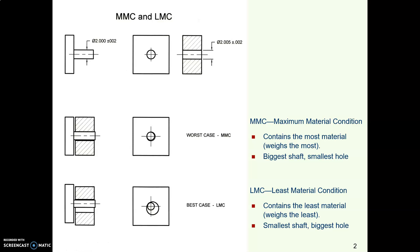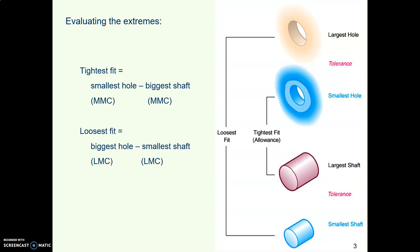And we can use these two extremes, the biggest and the smallest, to evaluate our tolerances that we put on drawings. And this is a good rule of thumb whenever you're designing something. If you always evaluate the two extremes, whatever they are, and they both work, then you can be pretty sure that anything in the middle will work.